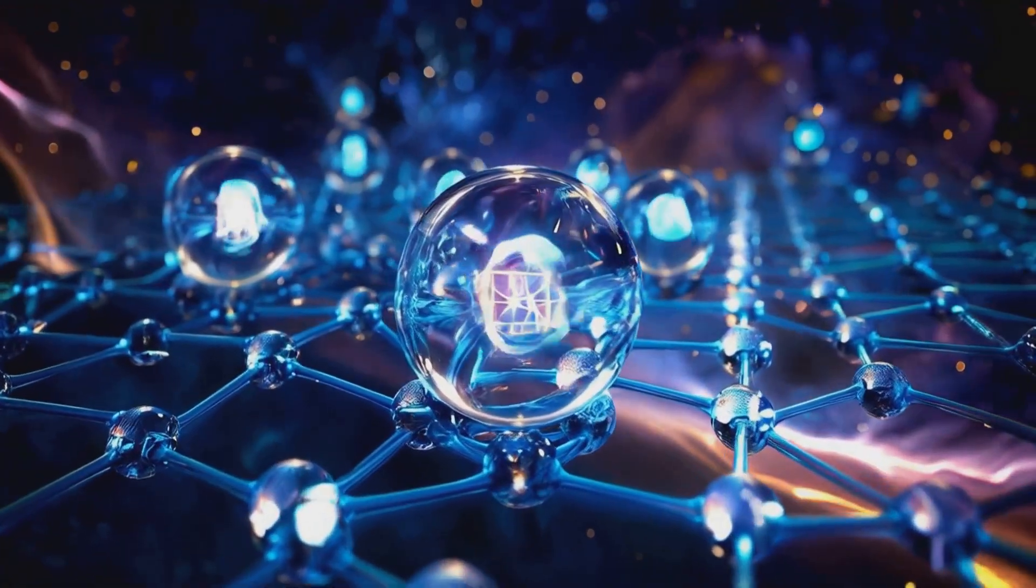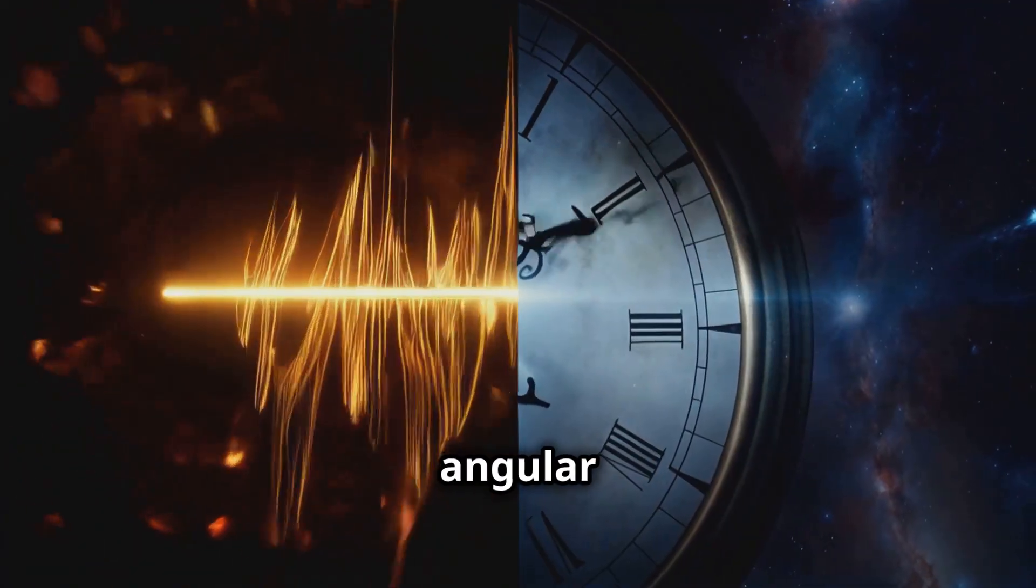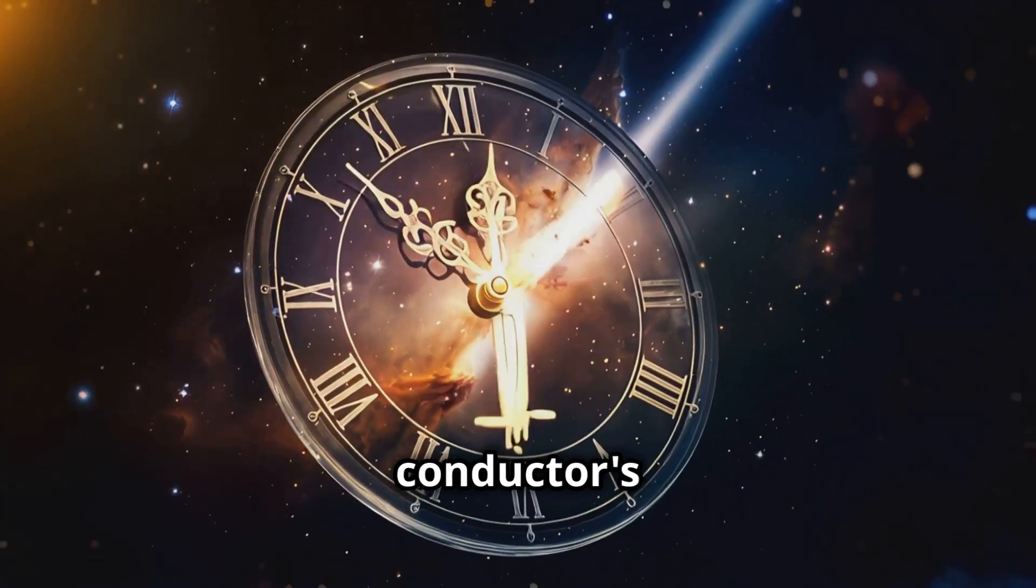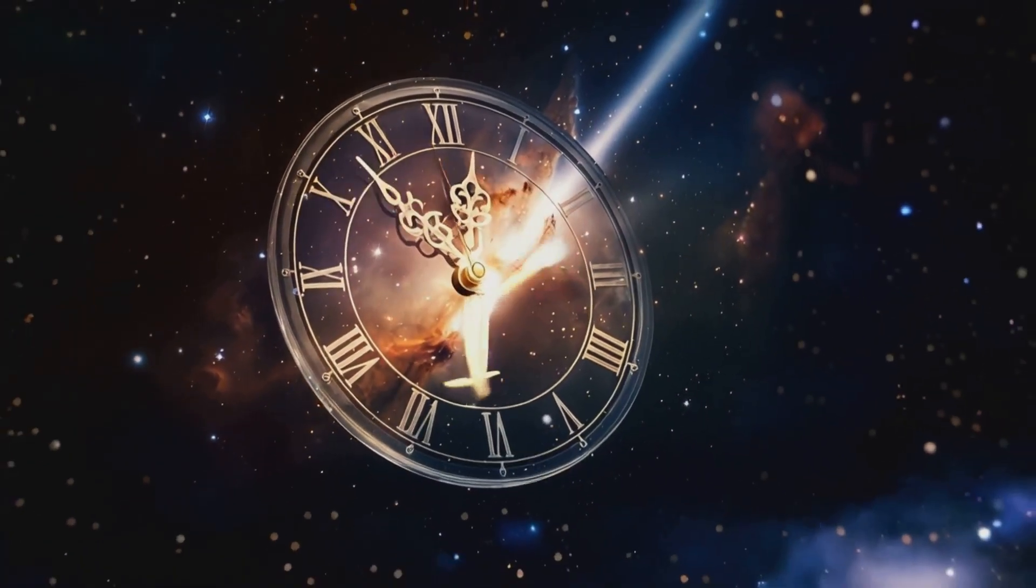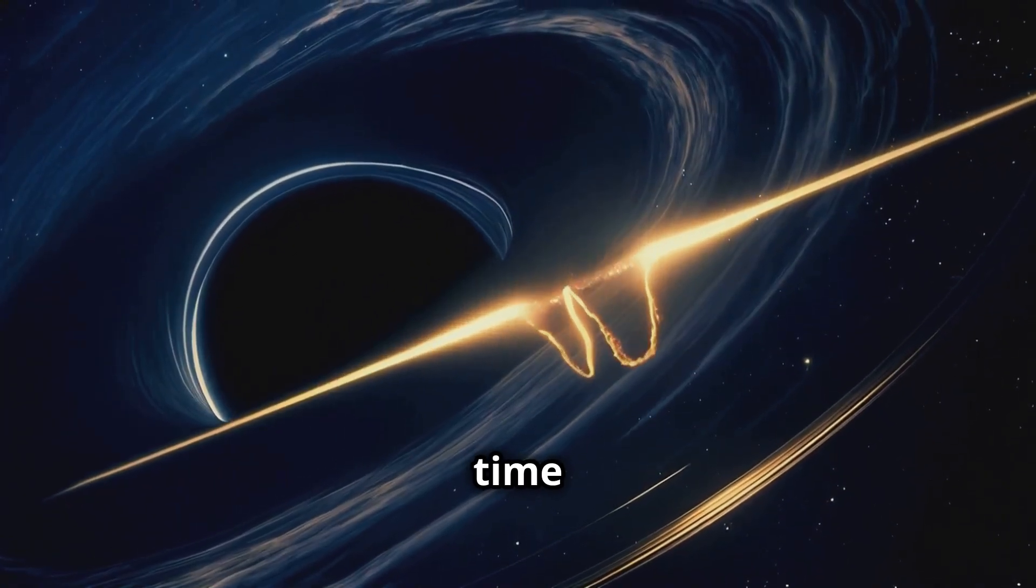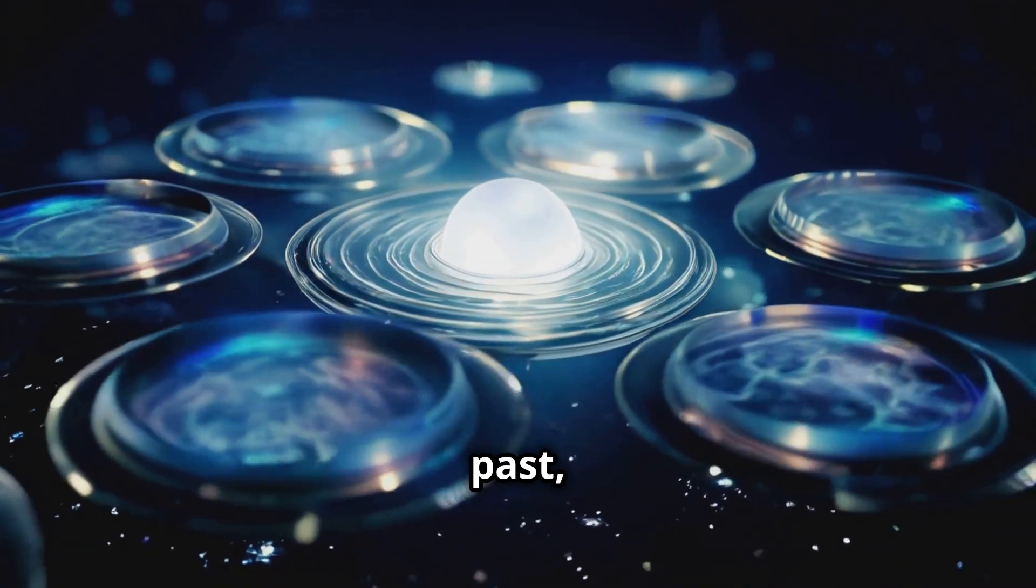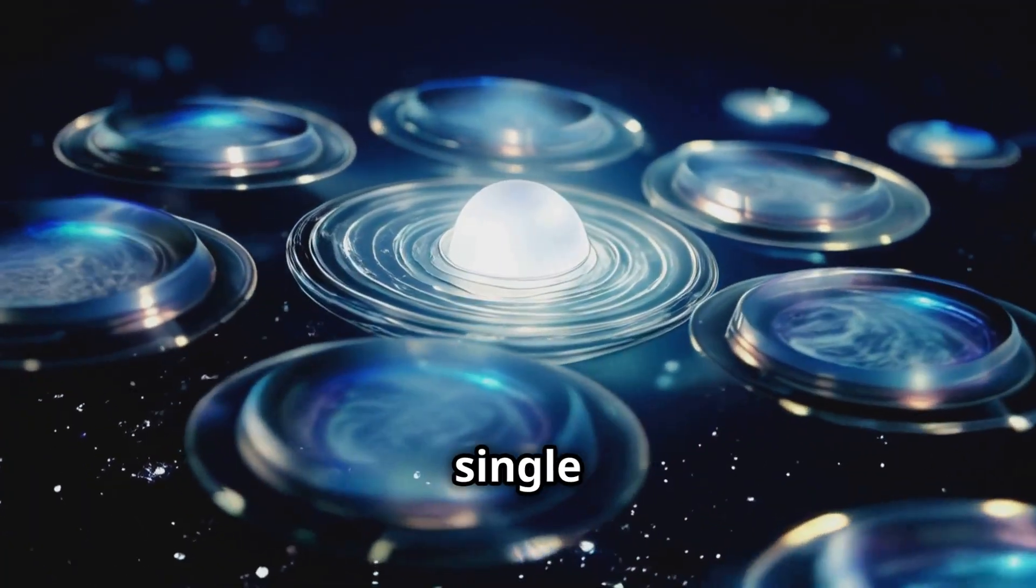On every cubit, an arrow of light spins with angular frequency omega, like a conductor's baton marking time. Yet for light itself, there is no time. Each spin connects the past, present, and future into a single melody.